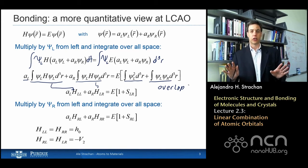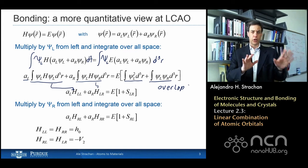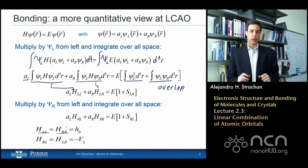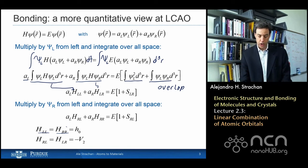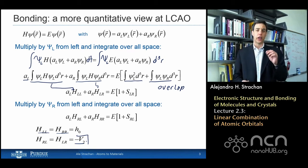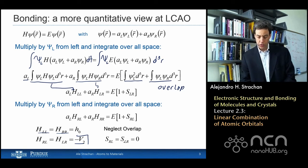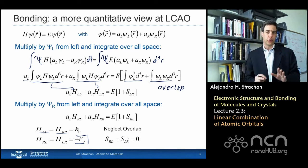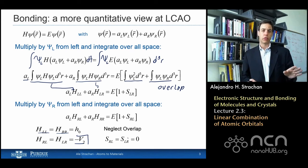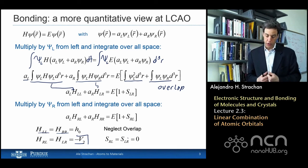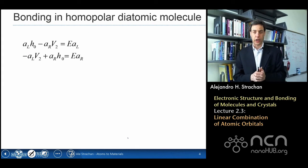Because of symmetry — because my two atoms are the same — these integrals involving the wave functions on the left and the right are symmetric. The ones that involve the same wave function on both sides of the Hamiltonian I'll call h0, and the ones that involve one wave function, the Hamiltonian, and the other wave function are called negative V2. To solve the equations analytically, I'm going to make one more approximation: neglecting the overlap S, treating it as 0. This is just for convenience to obtain an analytical solution; if we were using a computer, there would be no need to neglect this overlap term.